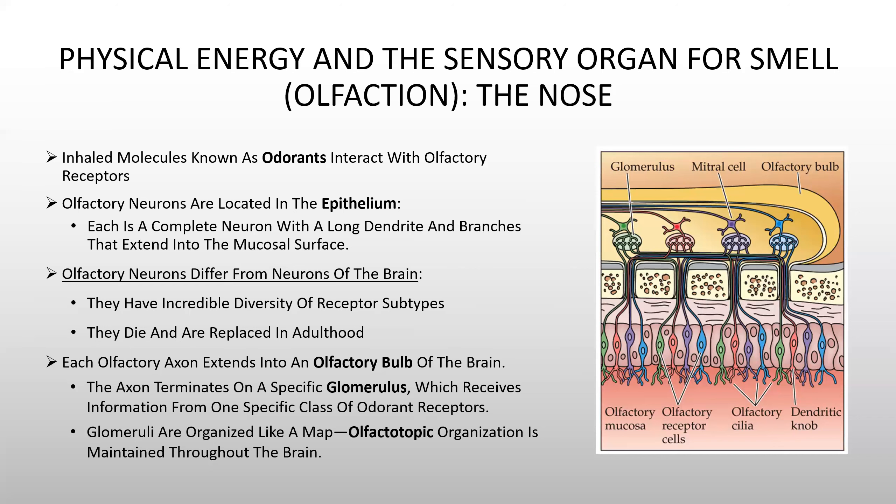Glomeruli are organized like a map. The olfactotopic organization is maintained throughout the brain — similar to the retinotopic organization of the visual system, where the retina is mapped in the occipital lobe, here we call it olfactotopic.